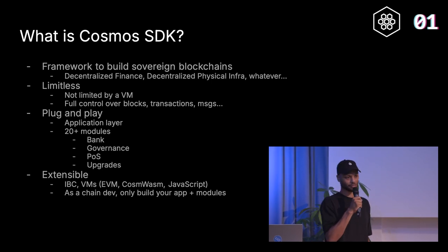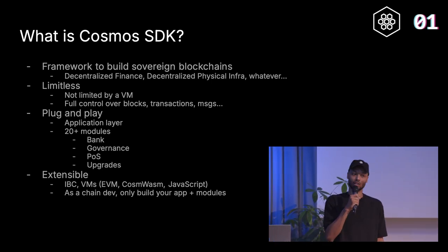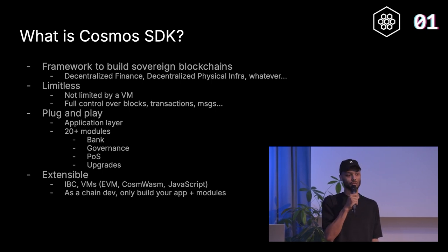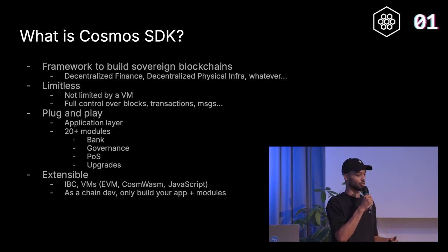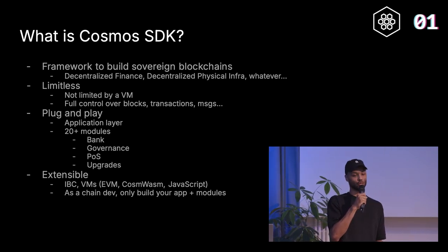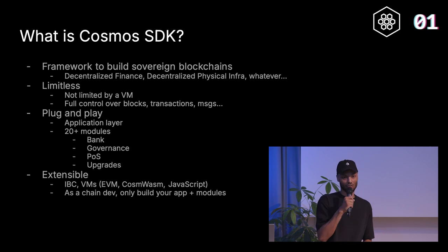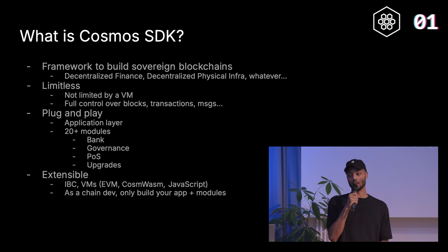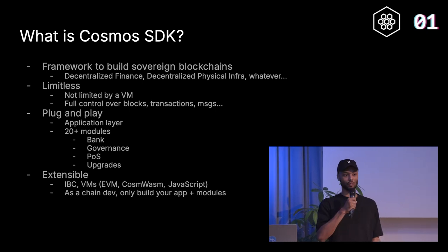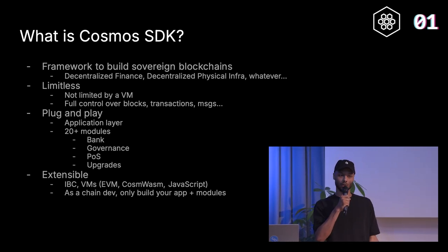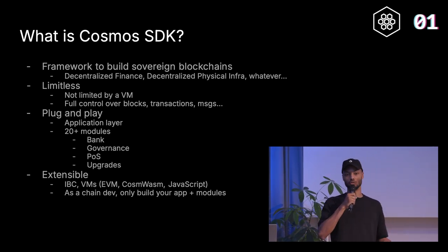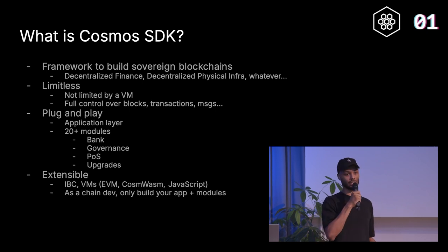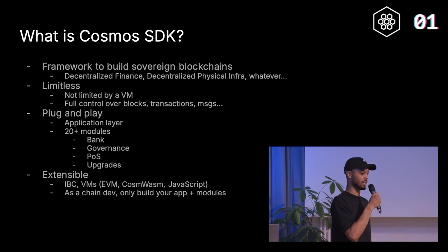You build your blockchain in Go and you're not limited by a VM. You don't have to use Solidity, and you have full control about what's happening in your blockchain — full control of all the blocks, transactions, messages, and what's getting in and out. It's very configurable, and it's also plug-and-play. There is a set of modules already provided by the Cosmos SDK so you can focus directly on the business logic you want to build.